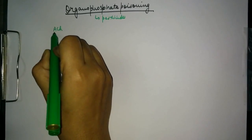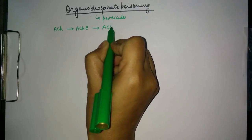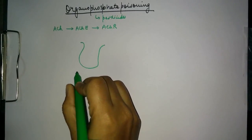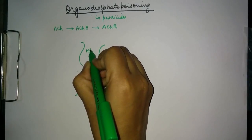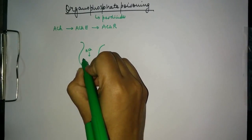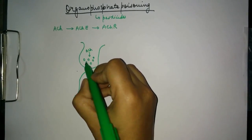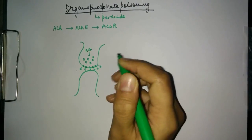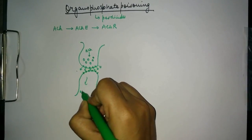The role of acetylcholine is important in organophosphate poisoning, along with the enzyme acetylcholinesterase and the acetylcholine receptor. Suppose these are two nerve terminals — acetylcholine is formed inside the neuron and stored in the form of vesicles. When a signal comes, these vesicles fuse with the membrane of the neuron and release acetylcholine into the surrounding area, which then binds to receptors on the adjacent neuron and leads to the activation of muscles.